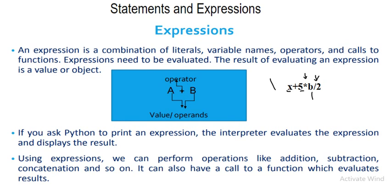In Python, an expression may contain variables, values, operators, and functions. We have already studied function calls. So an expression consists of values, variables, operators, and constants. The expression x plus 5 into b by 2 is a valid expression.